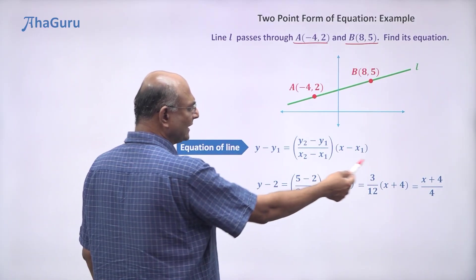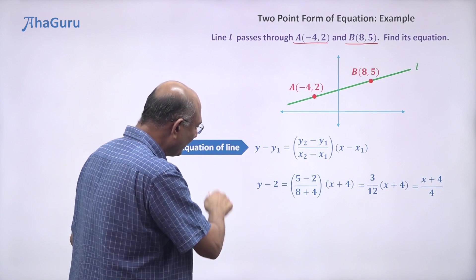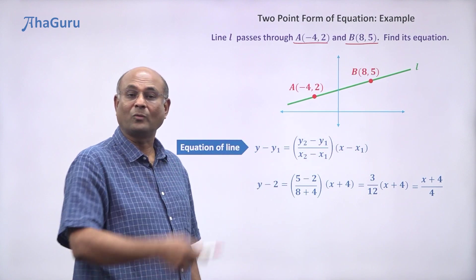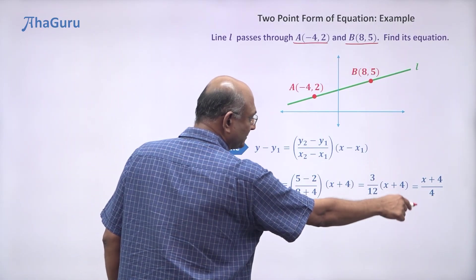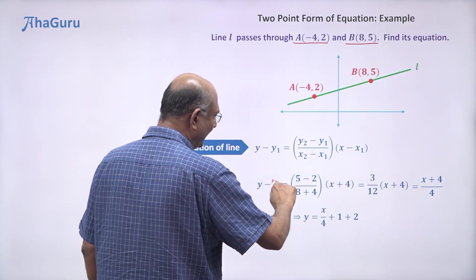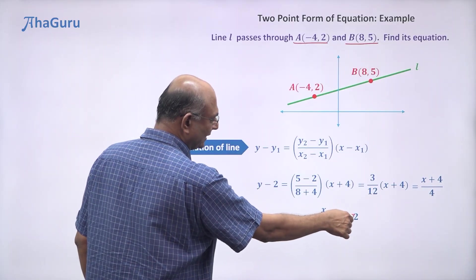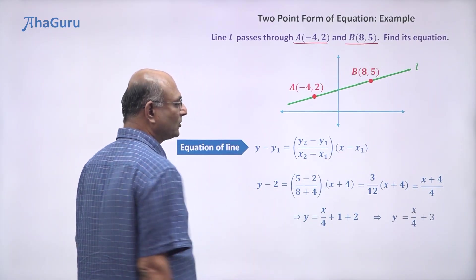But that looks a little messy, so why don't I just keep y on one side and move everything else to one side? Yes, we can do that. So y = x/4 + 4/4, which is 1, plus 2. So this is going to give me 3. So y = x/4 + 3.